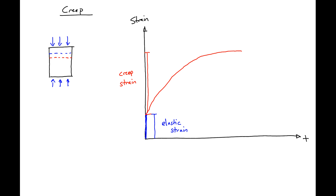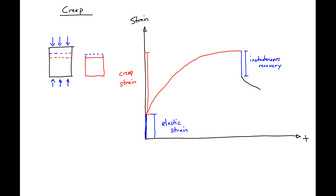So then if we remove the load, we'll initially have this deformed specimen. When we remove the load, there's going to be some type of instantaneous recovery. And then if the load is left off, there will be some kind of creep recovery.